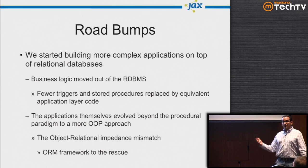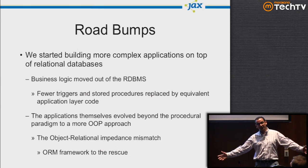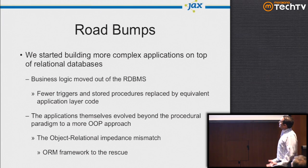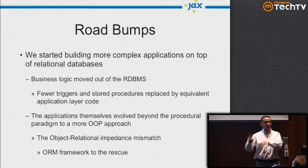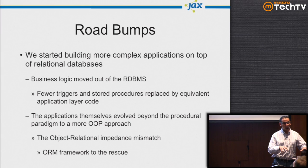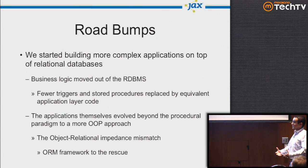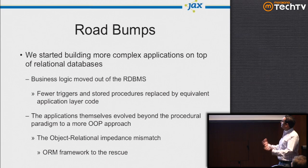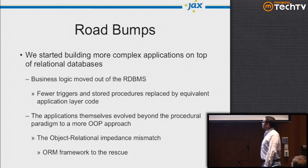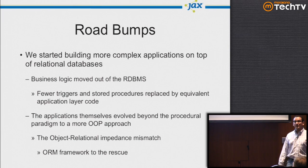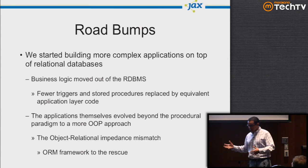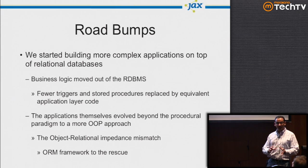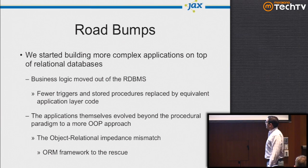We had some road bumps along the way. This had been working very well, but we started building more complex applications on top of relational databases. A lot of business logic moved out of the database to the application layer — we started hating triggers and stopped writing stored procedures. Code moved to the application layer as new frameworks, languages, and platforms evolved. Second, applications evolved beyond the procedural paradigm and became more object-oriented, giving us the object-relational impedance mismatch.